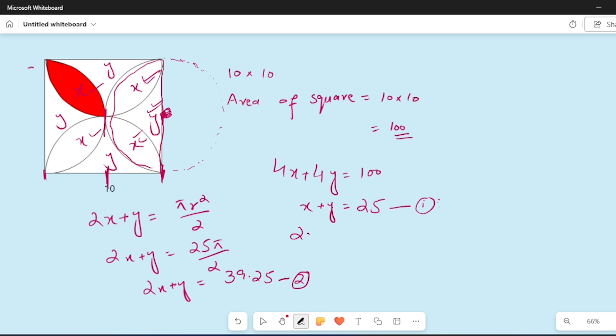So I keep equation 2x plus y equal to 39.25, and equation number 1. Equation number 2 minus equation 1, so what answer will we get? 2x minus x, y minus y, 0, 25 minus 39.25 minus 14.25. So here x value will get 14.25, which was our required area.